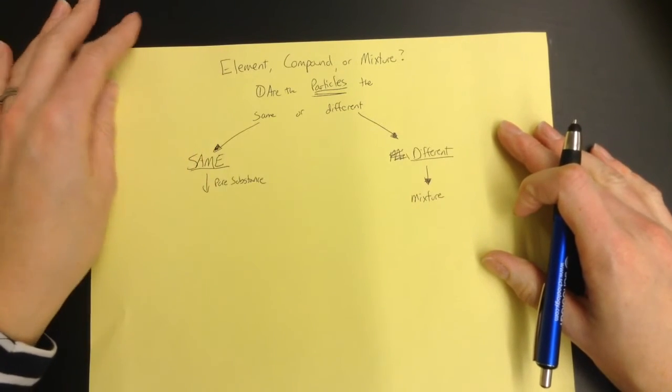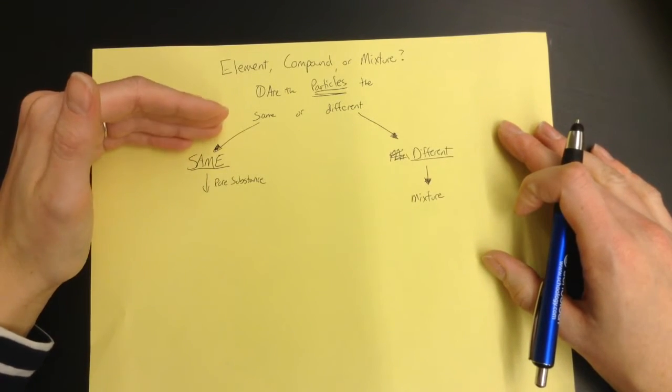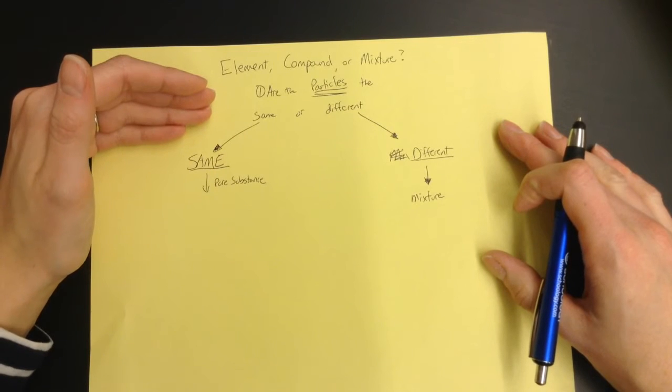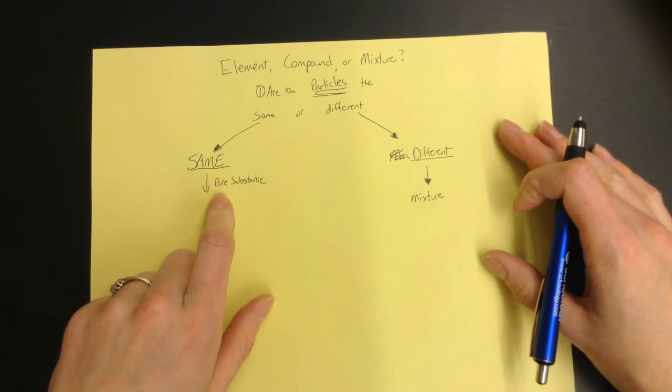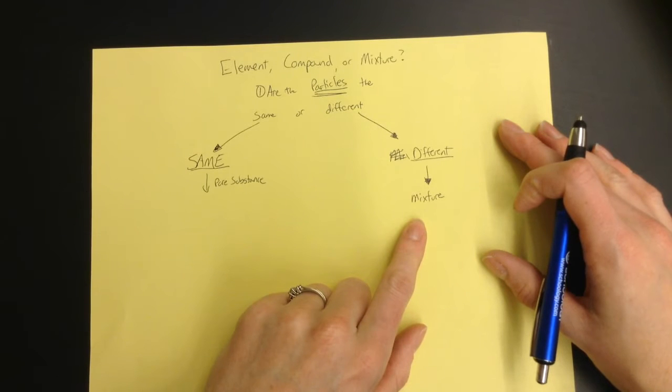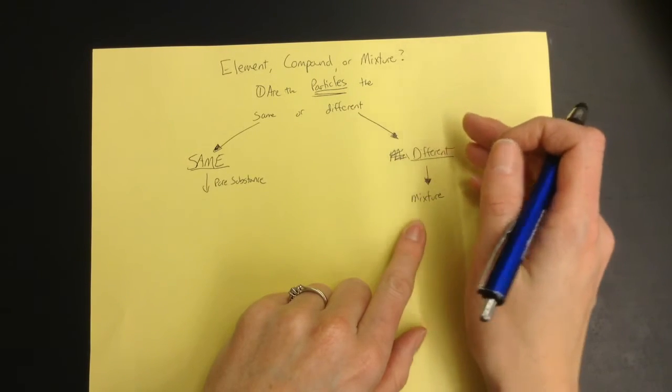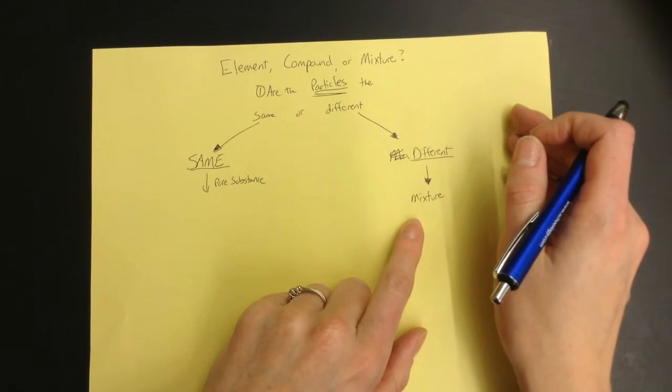One thing to note when you don't have a particle diagram, if you needed to know if the particles were same or different and you weren't really sure, if there's some sort of formula, it's probably a pure substance, and if there's not a formula, or there's a bunch of formulas with an and sign in between, then it is a mixture. If it's something that has an ingredients list on the back, like a bottle of soda or tea or anything like that, then it is a mixture.